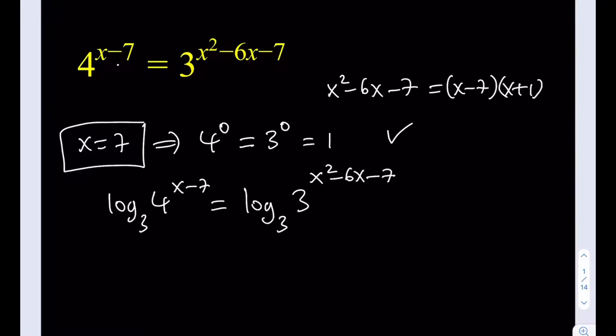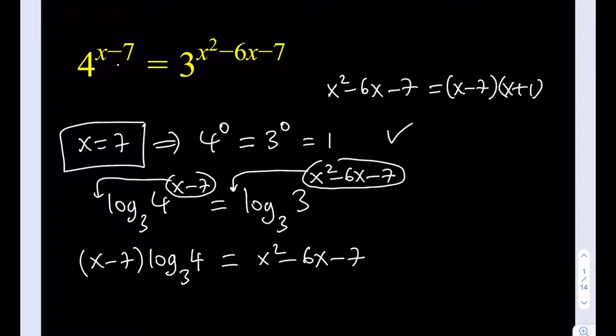Alright, so now, as you know, the good thing about taking logs of both sides is we can get rid of the exponents, right? So this guy over here is going to move to the front, and this guy over here is just going to move to the front. And they're just going to be factors. Okay, so from here we get x minus 7 times log 4 with base 3, and this one is going to be x squared minus 6x minus 7 multiplied by log 3 with base 3.